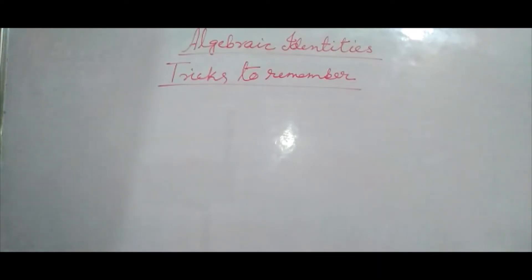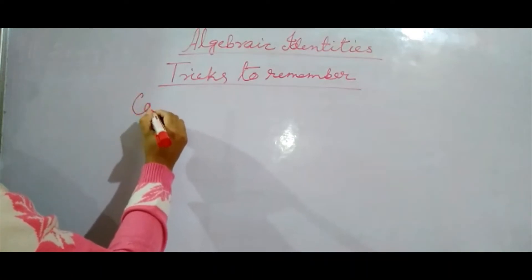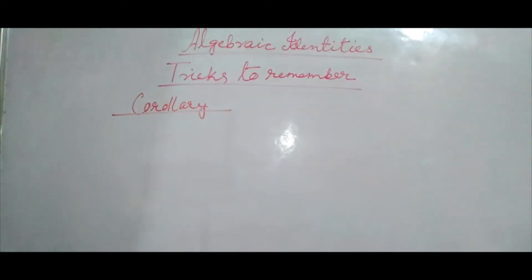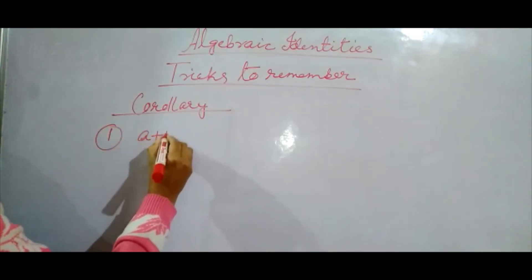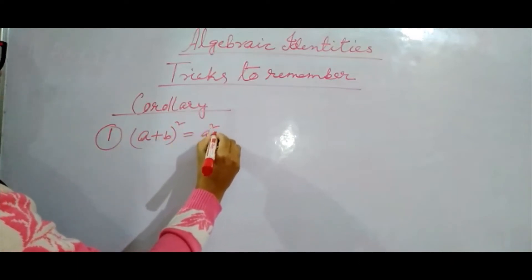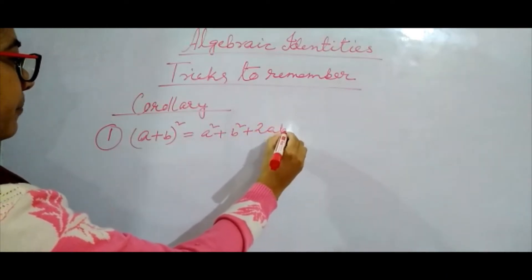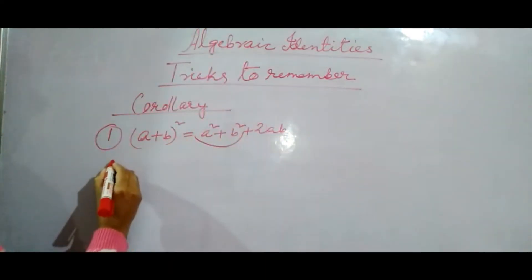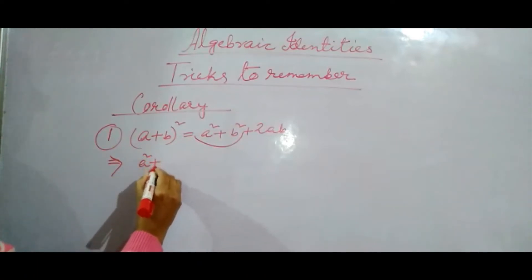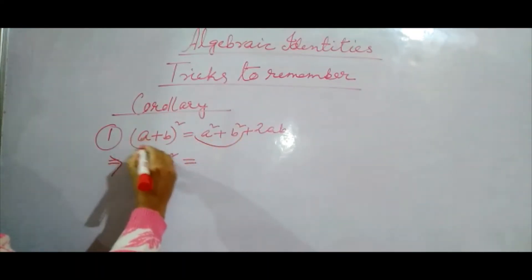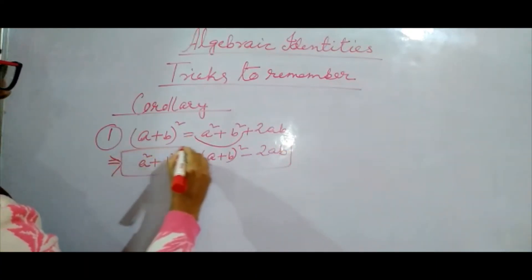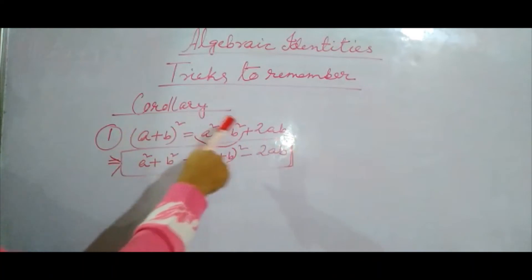Before we go to the last identity, let me do some corollaries. A corollary is something derived from what is already proved. Suppose we already know the identity A plus B whole square is equal to A square plus B square plus 2AB. Now in some questions you are asked to find the value of A square plus B square. From this identity we can find it: A square plus B square is equal to A plus B whole square minus 2AB. So this is a corollary. Even if you do not know, you can find it from the main identity.